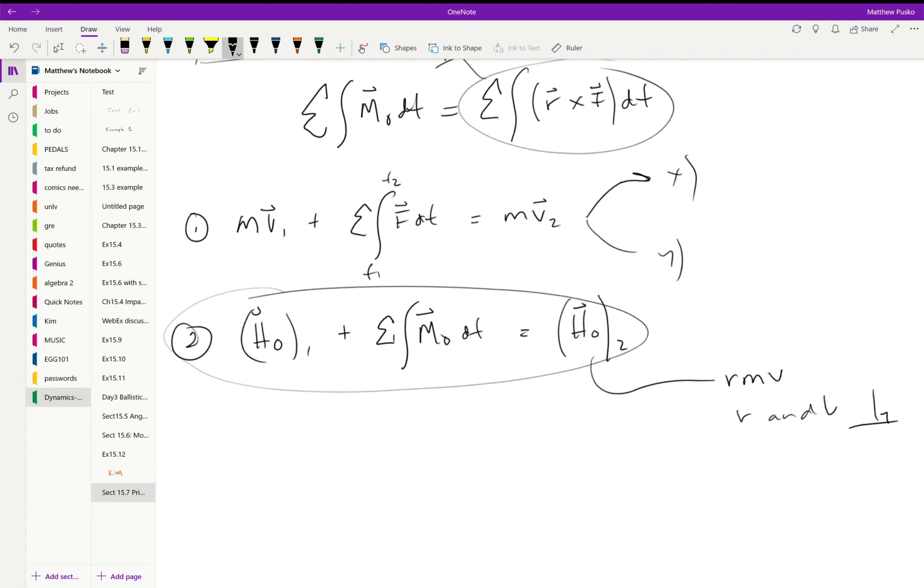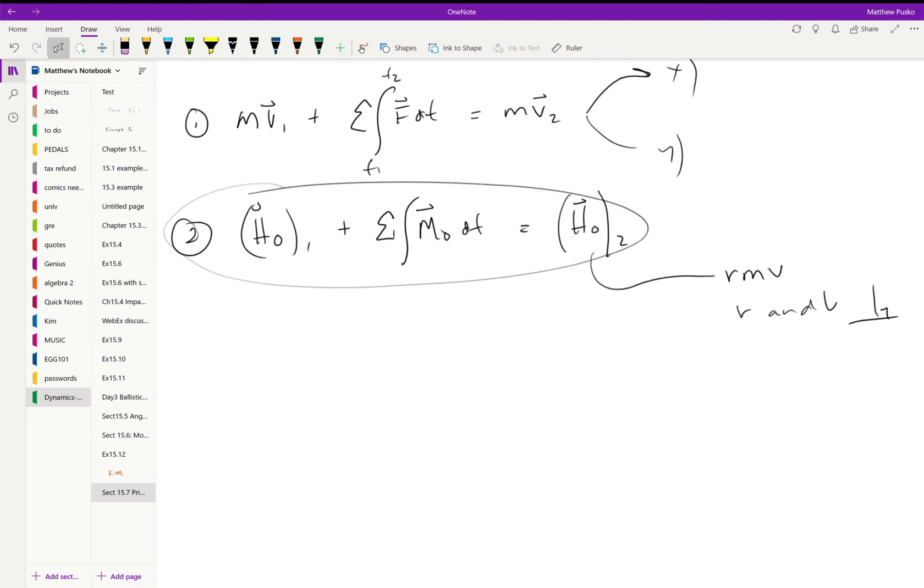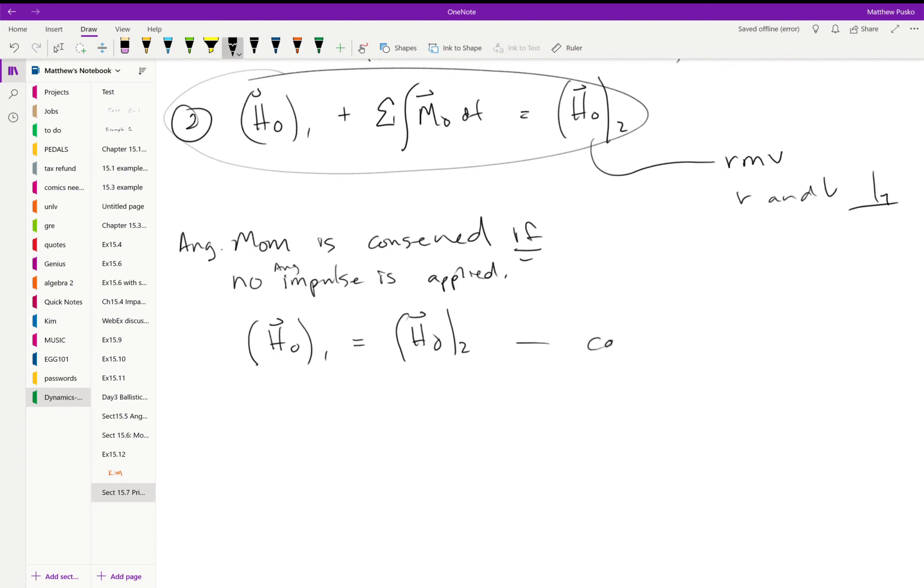Okay, so something else worth mentioning is angular momentum is conserved. So what does it look like? Well, it just says the angular momentum at one is equal to the angular momentum at two, and we can say that's the conservation of angular momentum. And the same thing goes for if we had a system or a summation of angular momentums.